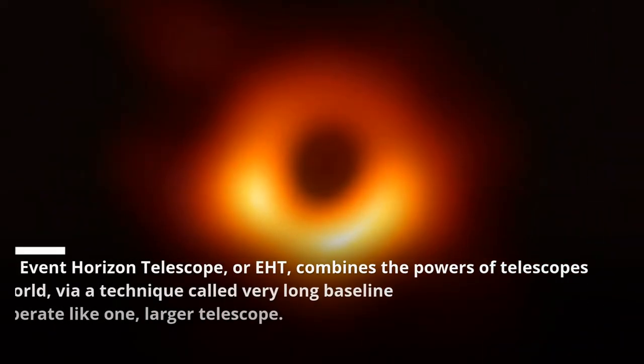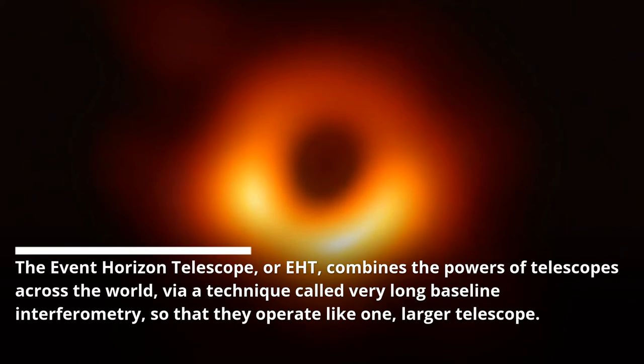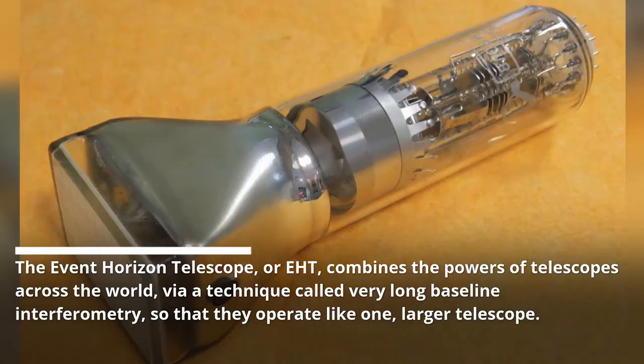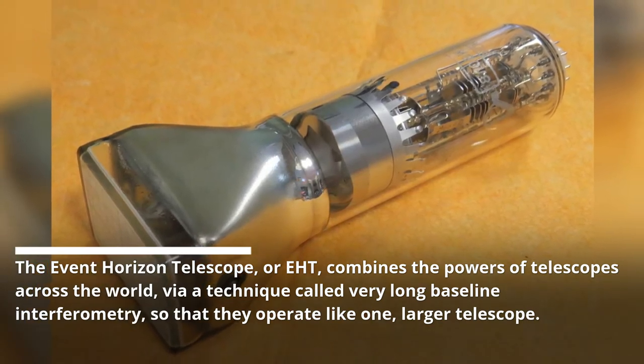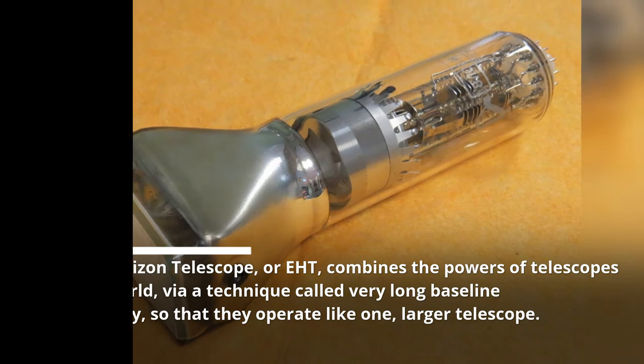The Event Horizon Telescope, or EHT, combines the powers of telescopes across the world via a technique called Very Long Baseline Interferometry, so that they operate like one larger telescope.